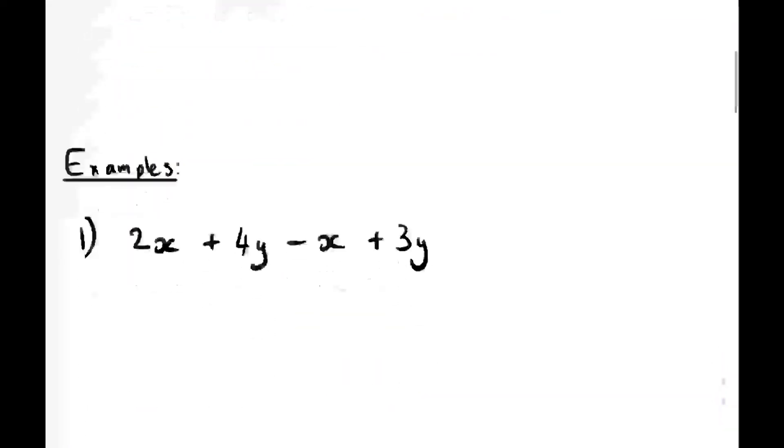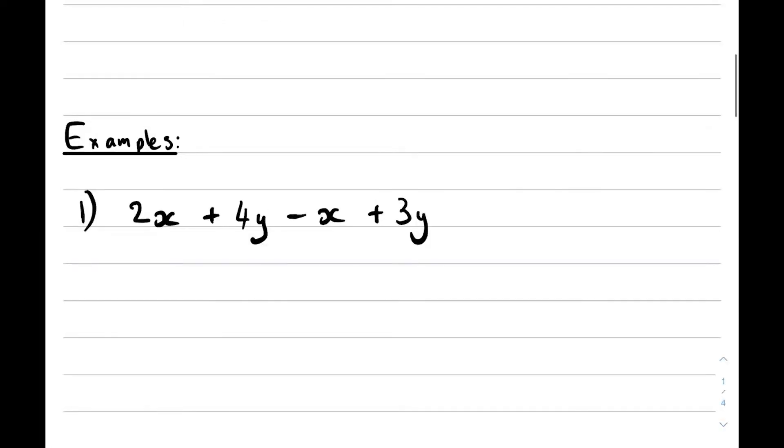The very first example looks like this: 2x + 4y - x + 3y. The first thing you need to realize is that here you actually have a 1 in front of the variable. So if there isn't a number there's actually a 1. Then you want to start looking for your like terms. This x is the same as this x, and this y is the same as that y. So these ones are like terms.